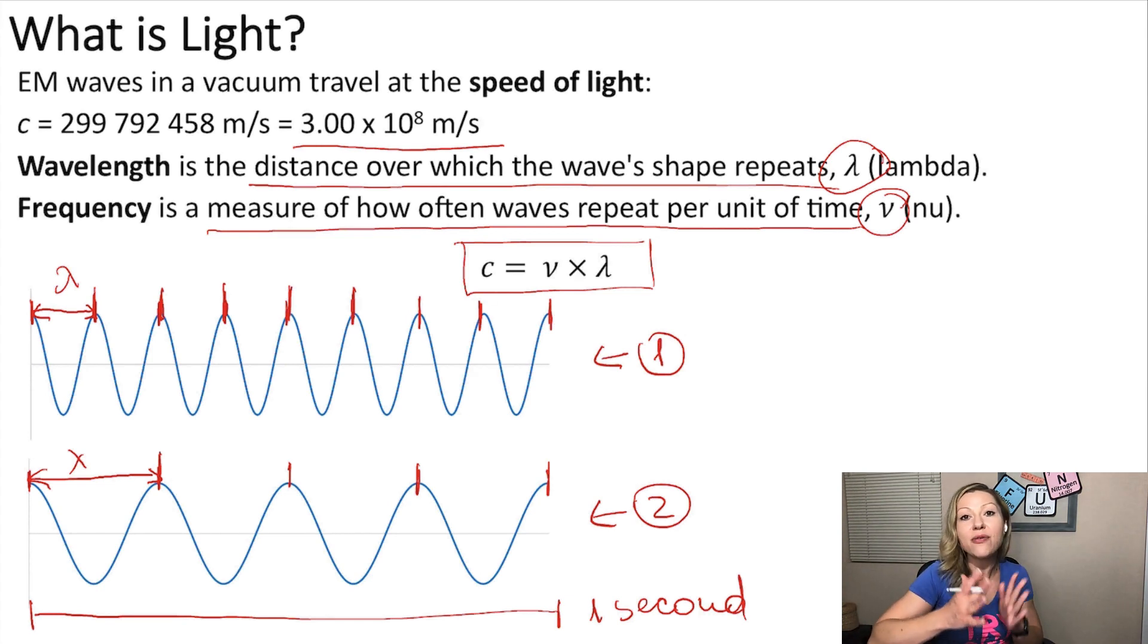So, this means that as my wavelength increases, my frequency will decrease, which makes perfect sense because if we multiply the wavelengths by the frequency, we will get a constant, the speed of light.